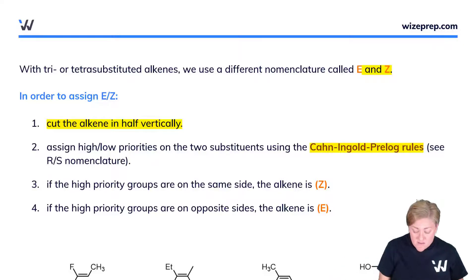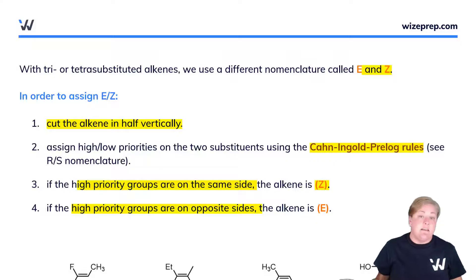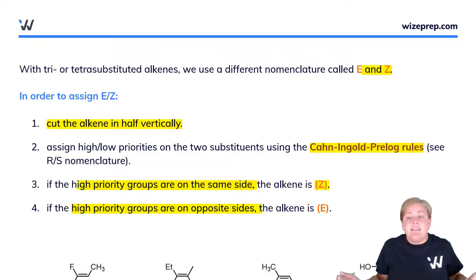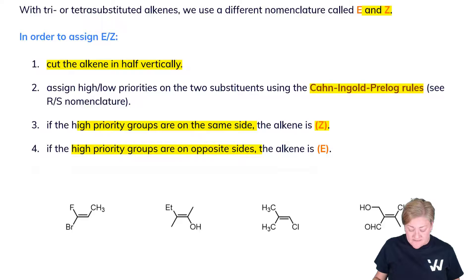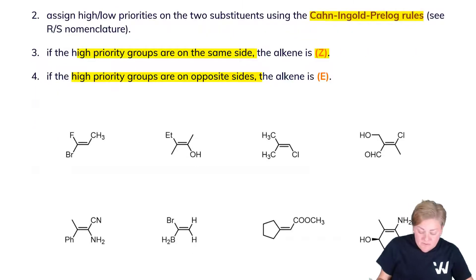If the high priority groups are on the same side, the alkene is Z, and if the high priority groups are on opposite sides, the alkene is E. And that's it — all you do is cut it in half, assign the priorities, and then see if you're on the same side or opposite sides. Let's go through some examples here.